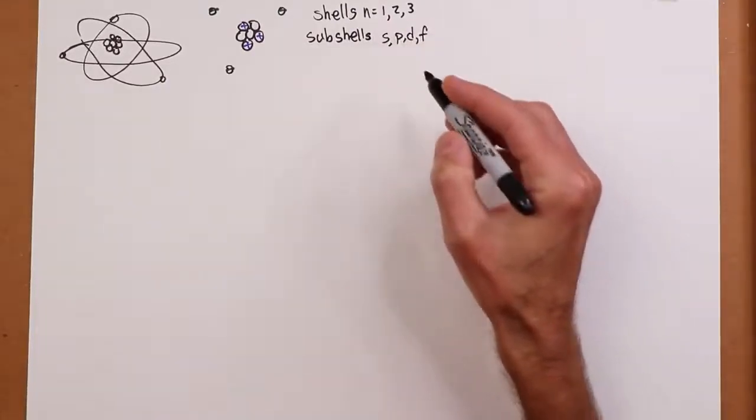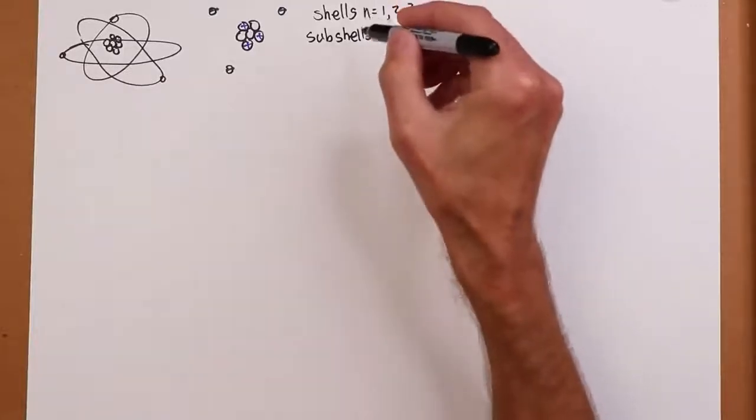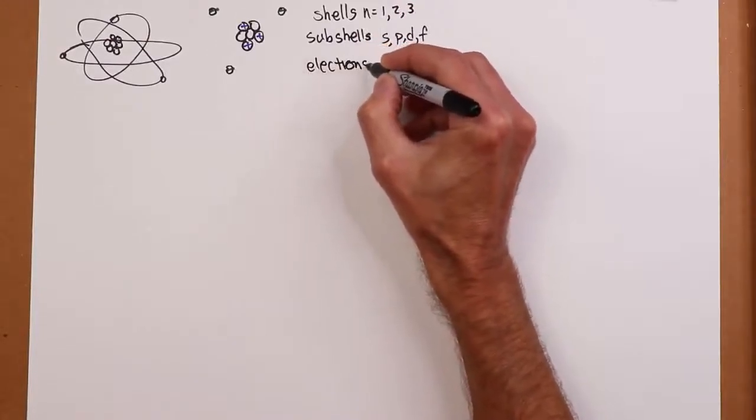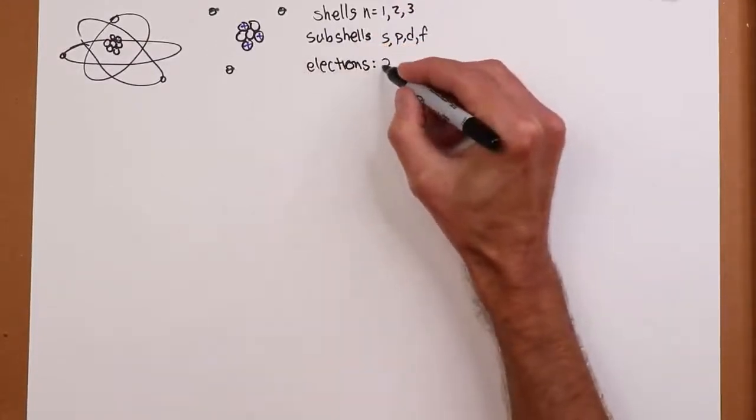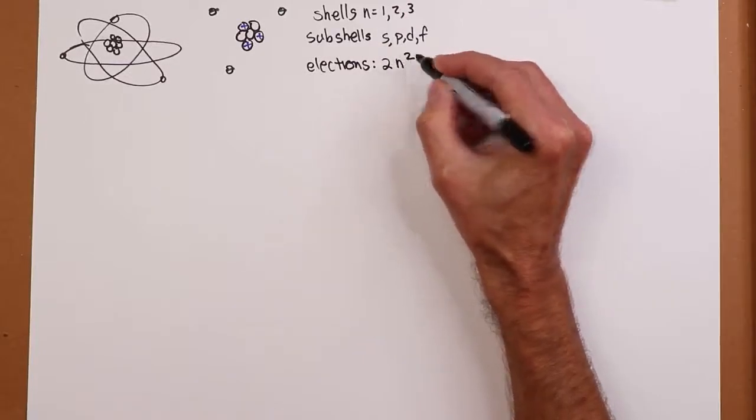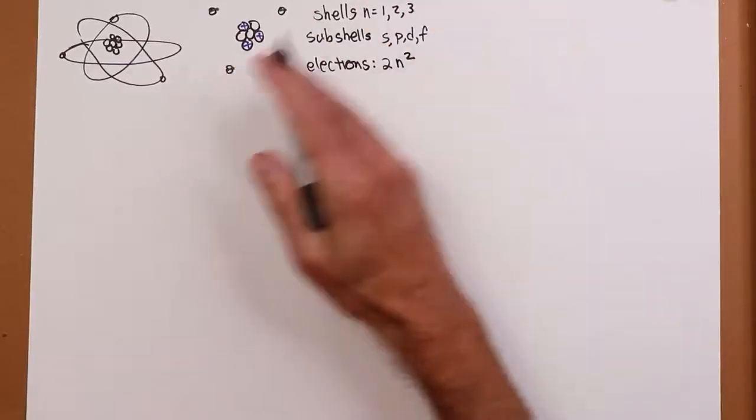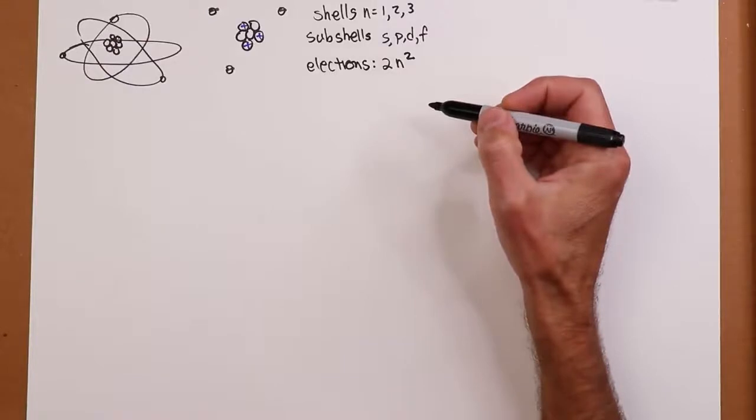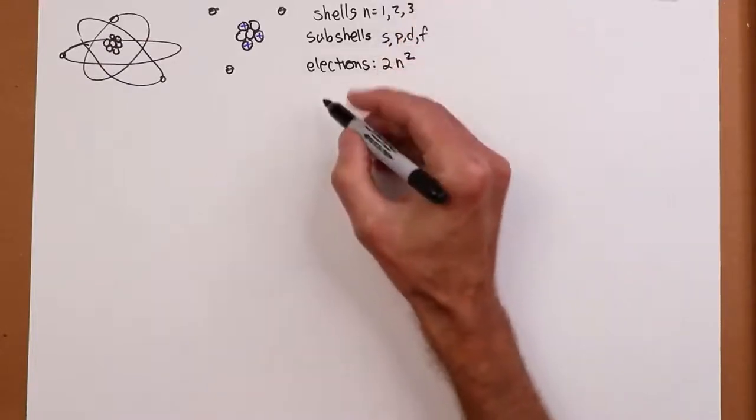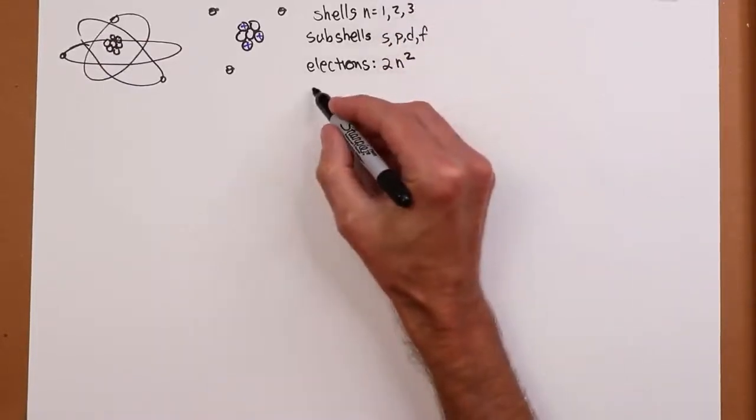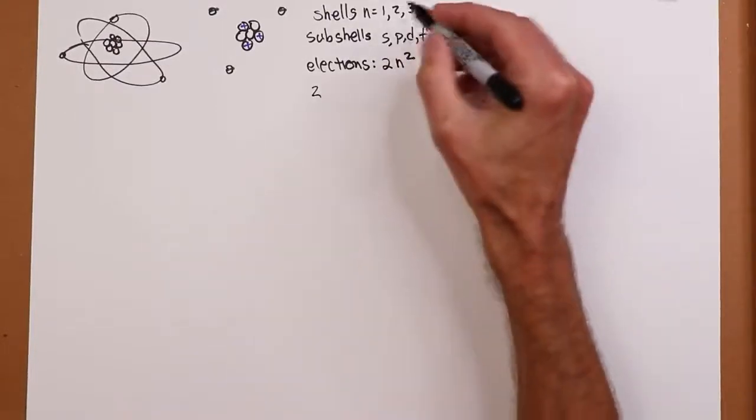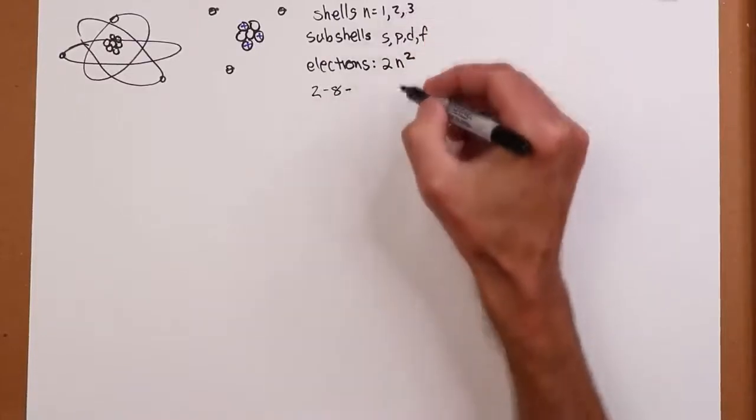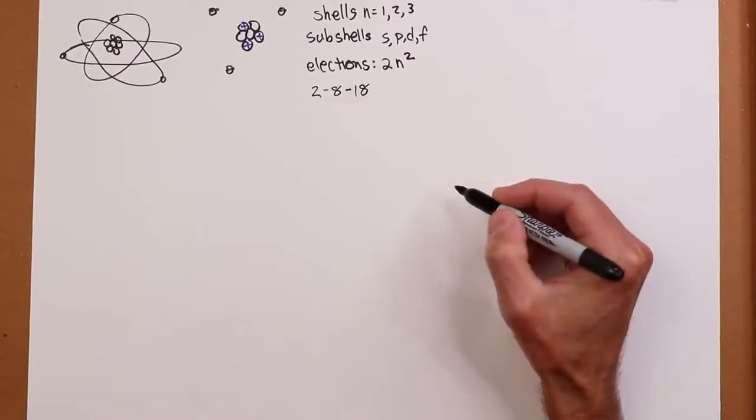Now, the number of electrons that can fit in a given shell is equal to 2n squared. And these will fill from low energy to high energy. So S will be filled first, then P, then D, and so forth. So when we look at this, the organization that we would have, if n is 1, we can have 2 in the first shell. If n is 2, we have 8 in the next shell. And then, 3 squared, we have 18 in the next shell.